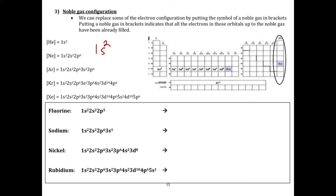Now what we're going to do is we're going to learn about noble gas configuration. What noble gas configuration does is it shortens the electron configuration to make it more manageable. It also allows us to see the valence electrons and the electrons in the outermost energy level more easily.